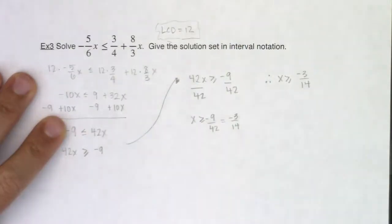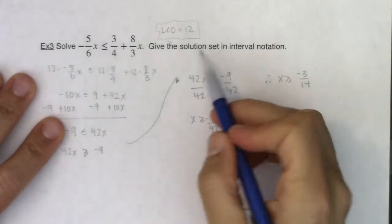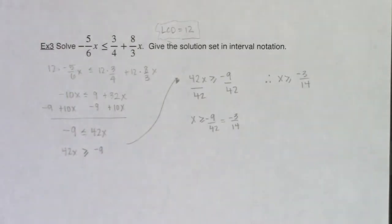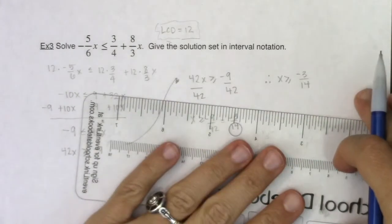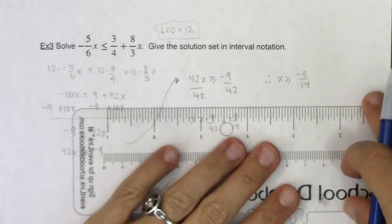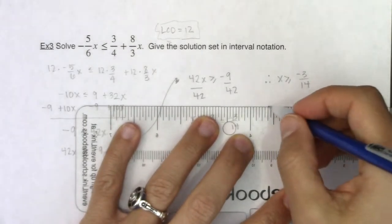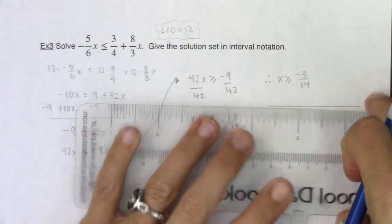All right, so we've got that interval answer, but the directions say, give the solution set in interval notation. Now, I'm going to write this up as a graph, just so we can start to connect these ideas. You don't have to do this every time. I just want to make sure that we're connecting inequalities to graphs to interval notation.